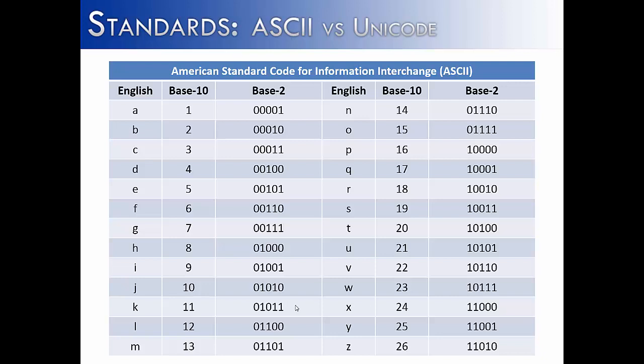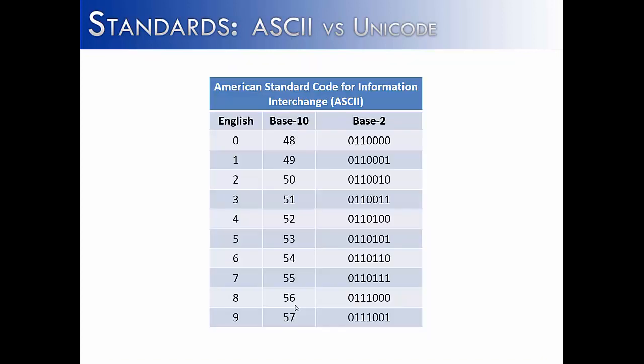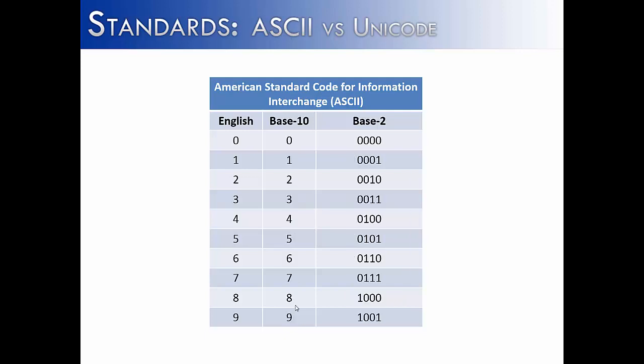So we have capital letters, lowercase letters, and now we are going to be looking at numbers. They started with 48 and they went to 57. Watch what happens — you may be able to predict this — when I remove not the first two but the first three binary digits in ASCII. When I convert using just the last four digits, I get 0 through 9, which corresponds perfectly with the symbol 0 through 9.